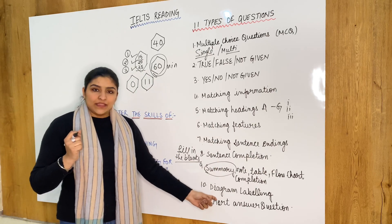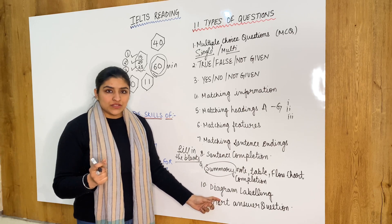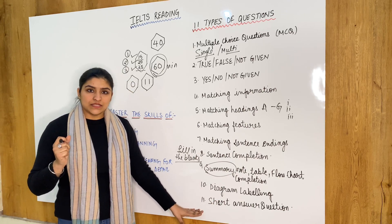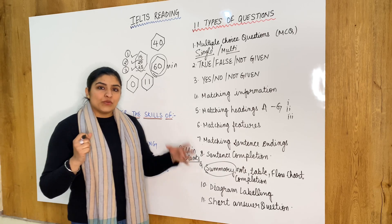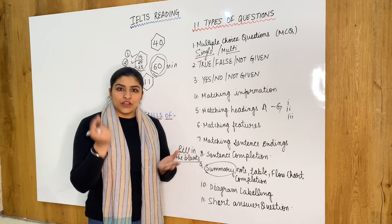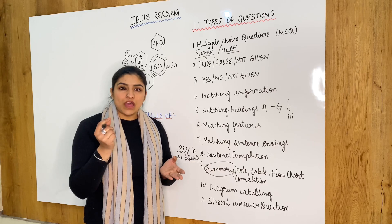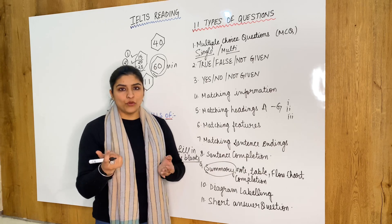Tenth is diagram labeling, which is the easiest question type there. And last is short answers. In short answers you get a question. In front of that you have to give your answer in either 2, 3 or 4 words.